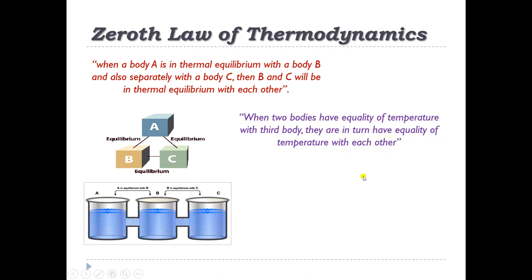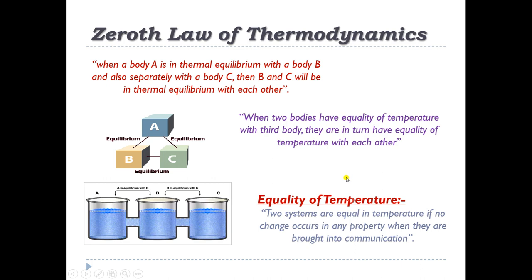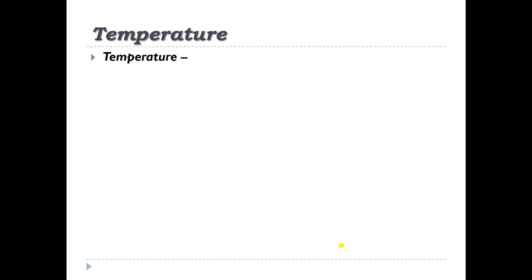Those are the two statements given for the zeroth law of thermodynamics. Regarding equality of temperature: two systems are equal in temperature if no change occurs in any property when they are brought into communication. If that is the case, the systems are said to be in equality of temperature. Temperature is defined as an intensive property which is independent of size and mass of the system.